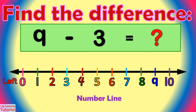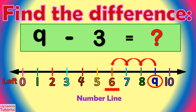Let's have 9 minus 3. We circle the minuend, which is 9, on the number line. Then we move 3 numbers to the left: 1, 2, 3. We land on 6. So the difference of 9 minus 3 is 6.